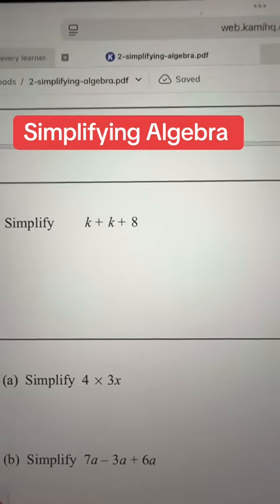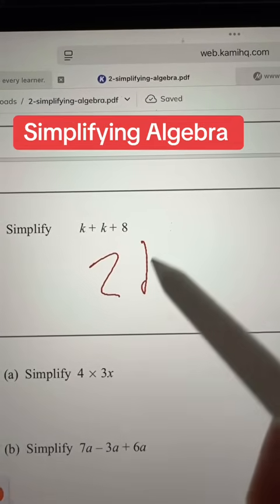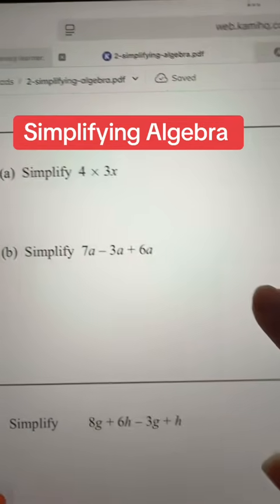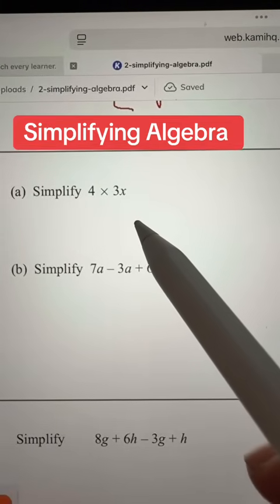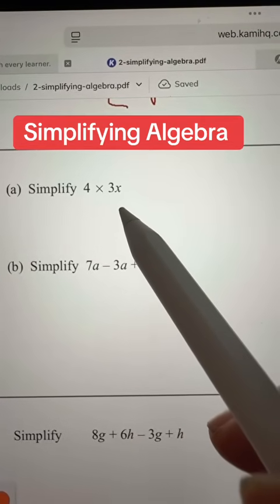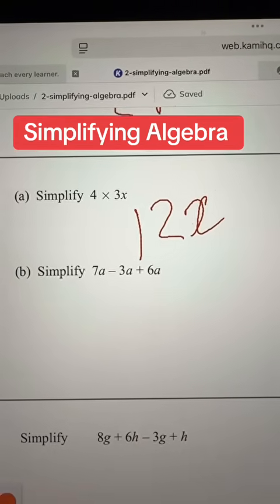Then you have k plus k plus 8, so that will be 2k plus 8. Then you have 4 multiplied by 3x, so 4 times 3 is 12x.